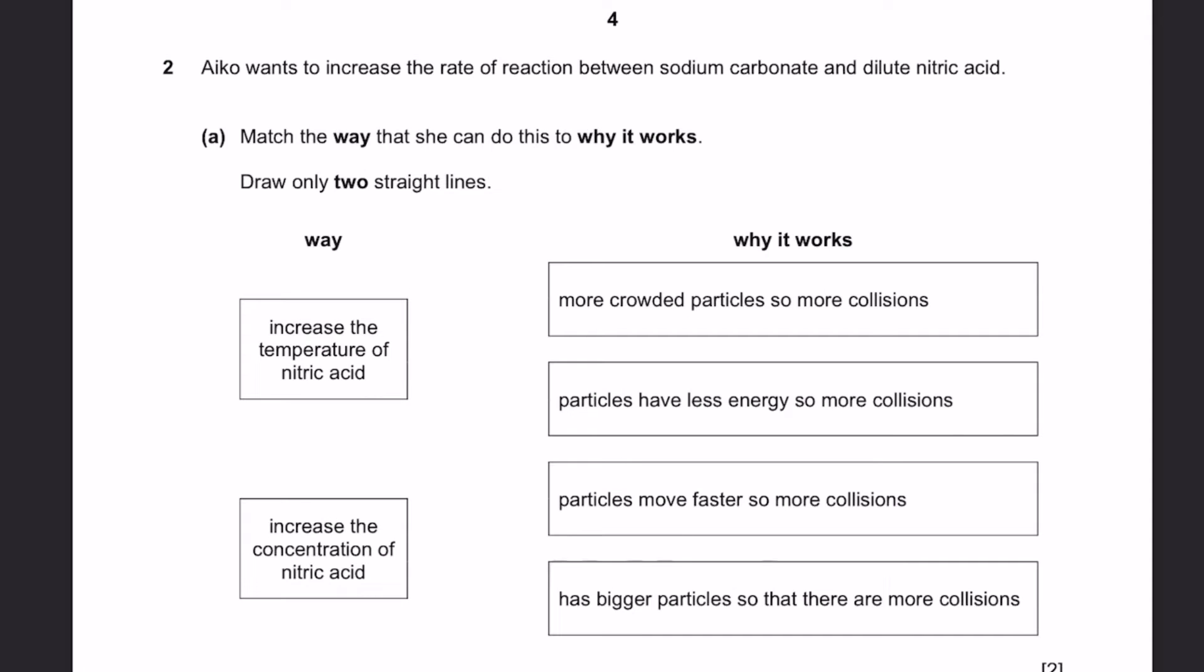Question 2. Aiko wants to increase the rate of reaction between sodium carbonate and dilute nitric acid. Part A: Match the way that she can do this to why this works. So draw only two straight lines.